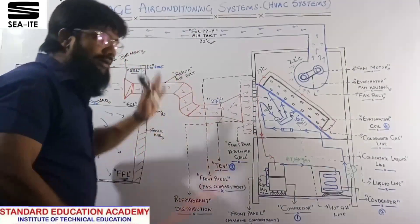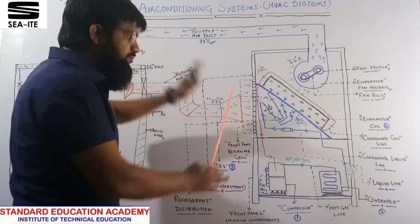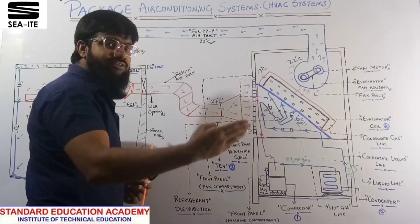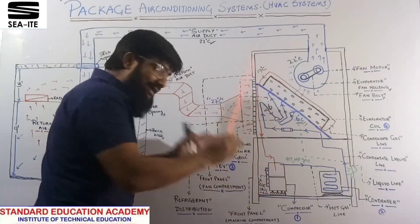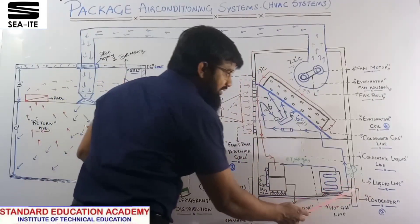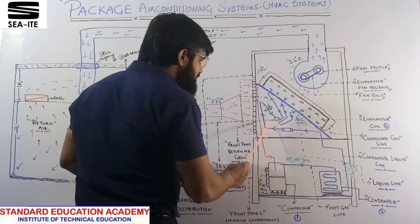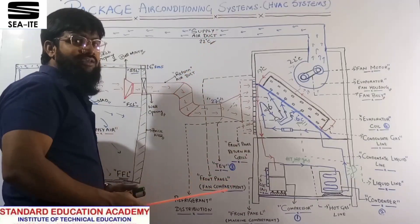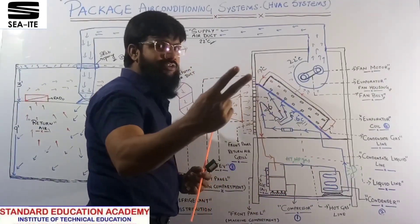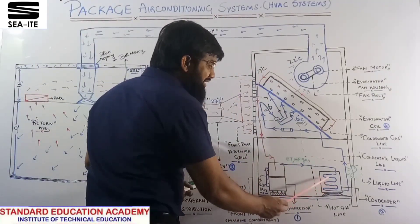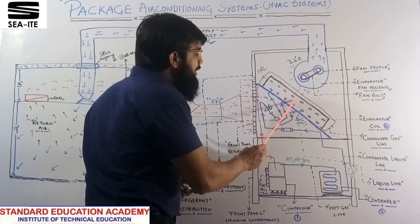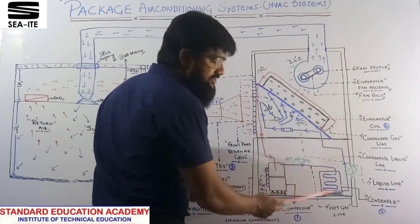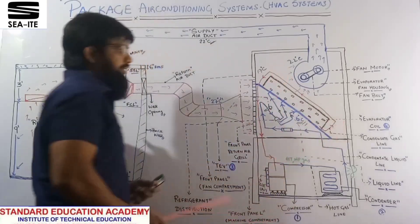Why is the name 'Package' given to this particular system? Because in one particular box, all four components of the refrigeration cycle are placed: compressor, condenser, expansion valve, and evaporator. In our refrigeration cycle, we have two heat exchanging coils — one coil in the condenser section and the other coil in the evaporator section.